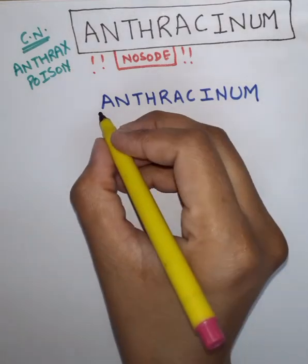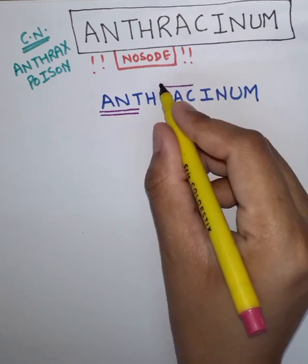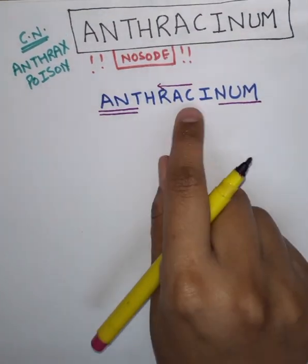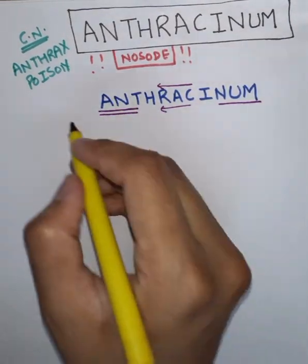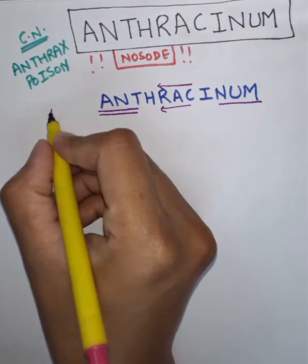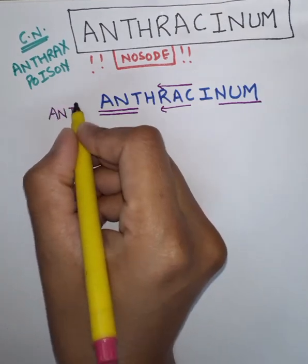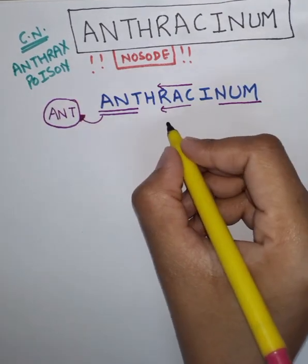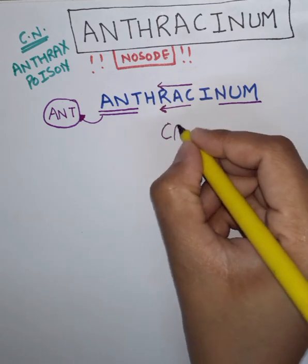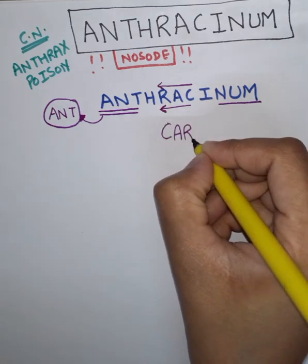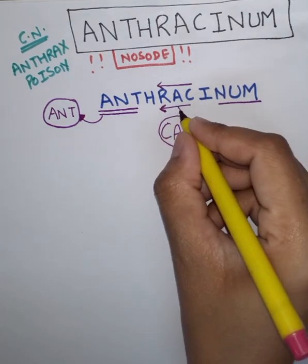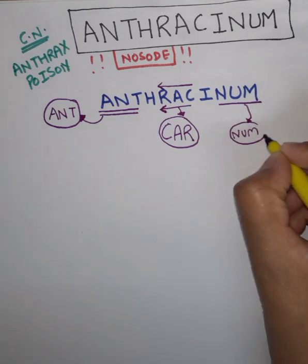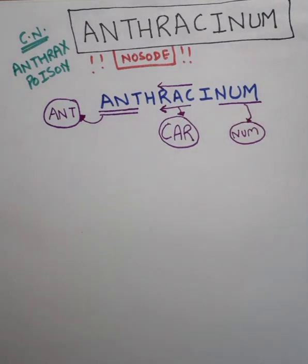You just have to learn the mnemonic from here: take ANTHR, then A-C backwards becomes CAR, and then NUM. So we have AND, CAR, and NUM — these are the three parts of the mnemonic, with two points under AND.